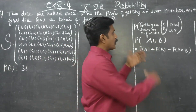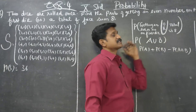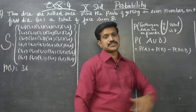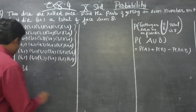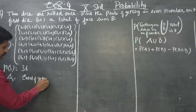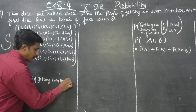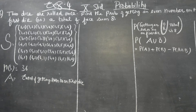We follow a systematic procedure. First, let A be the event of getting an even number on the first die. We write A in descriptive form: A is an event of getting an even number on the first die.